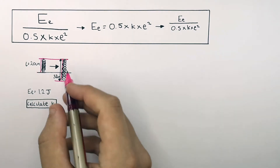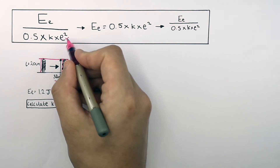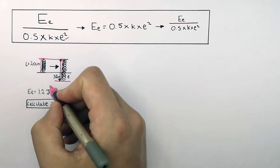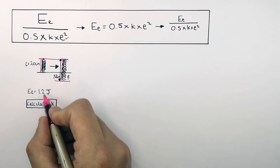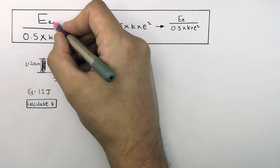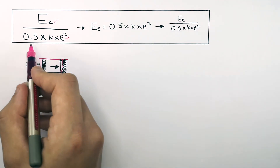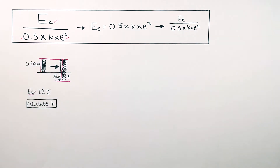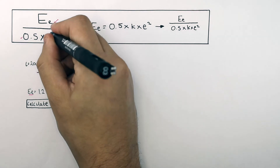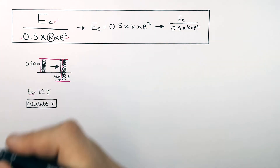So what do we have? We've got the extension, which we're going to work out in a moment, and we've got the energy stored in the elastic potential energy store of the spring. We've also got 0.5, which means we're left with k, the spring constant. So we're trying to work out k, the spring constant.